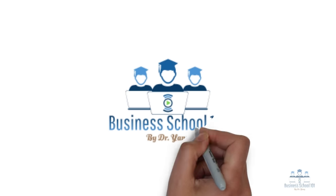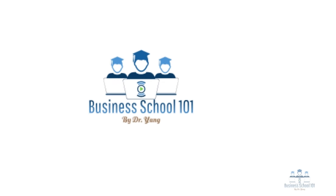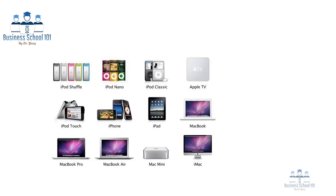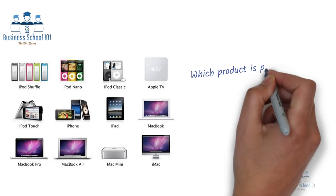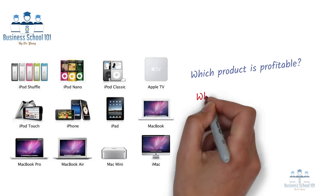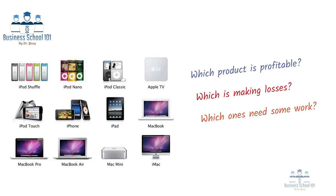Hello everyone, welcome to Business School 101. For a company with a big portfolio, it's important to assess its product lines regularly to see which product is profitable, which is making losses, and which ones need some work. This practice helps the company to allocate its resources accordingly to function more efficiently.